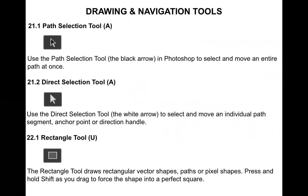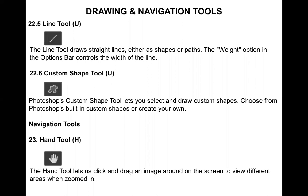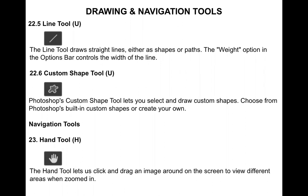That concludes today's presentation. We discussed the Path Selection Tool, used to select the path; the Direct Selection Tool, used to select and edit anchor points; and various drawing tools used to draw different shapes — like the Rectangle Tool to draw rectangles, the Rounded Rectangle Tool for rounded rectangles, and the Ellipse Tool to draw ellipses. We also covered the Polygon Tool, Line Tool, and Custom Shape Tool.